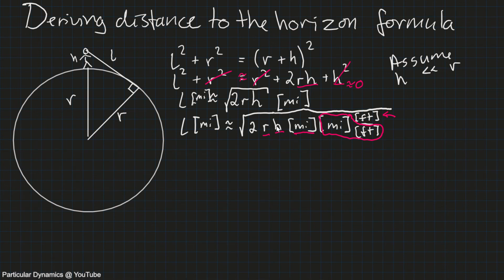So I'm just going to group them together to make it a little more clear. We have the square root of 2. I'm going to take the miles per foot to the front, like this.